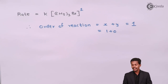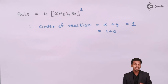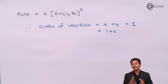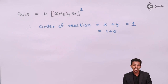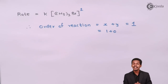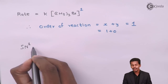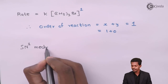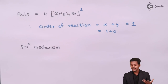The SN1 reaction is a two-step mechanism. Step number one is a very slow step, while step number two is very fast. In step one, bond breaking takes place, which is why this step is known as the rate determining step (RDS). The SN1 mechanism is a two-step process.